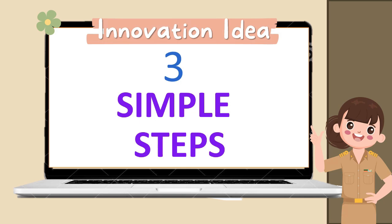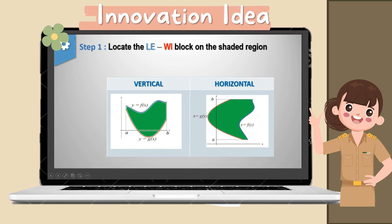Step 1: Locate the Luwi block on the shaded region. The block is located vertically if the limit uses x-boundaries, and it is located horizontally if it uses y-boundaries. Remember, length is longer than width. So we label the longer side as length and the shorter side as width.